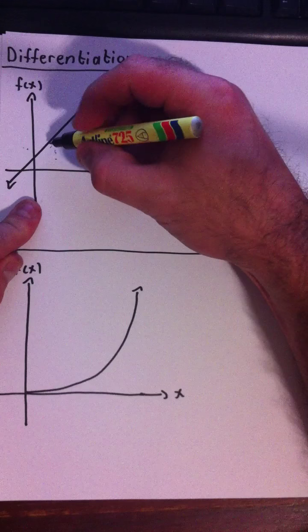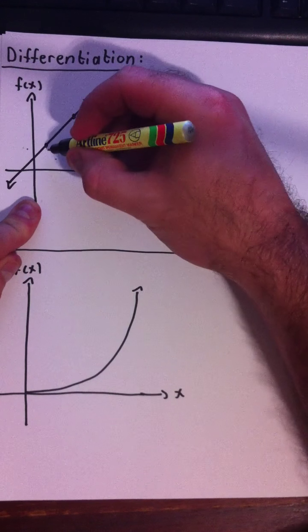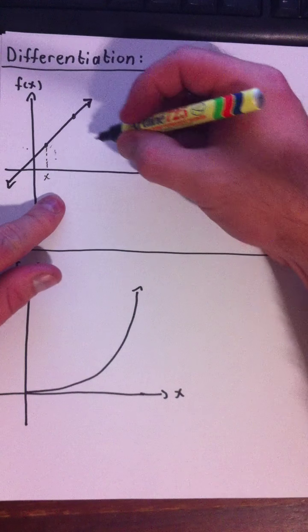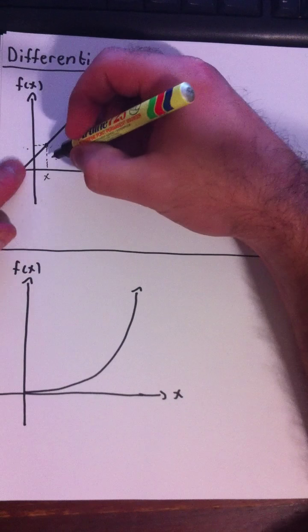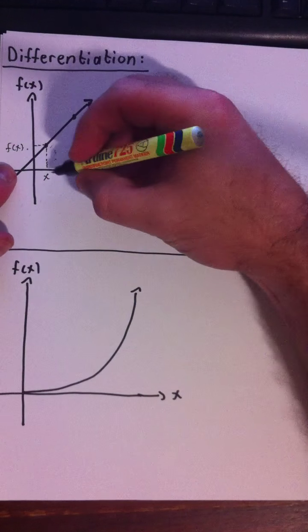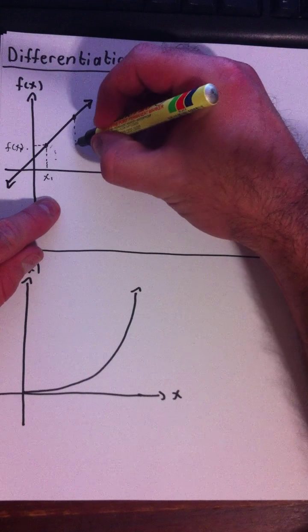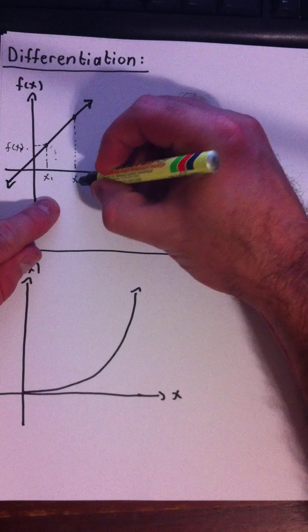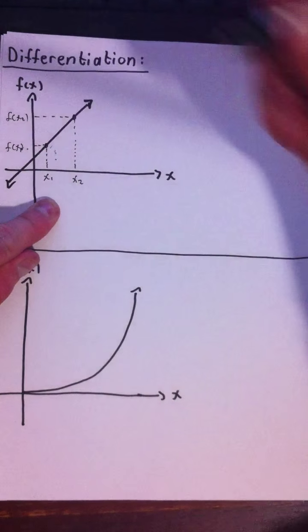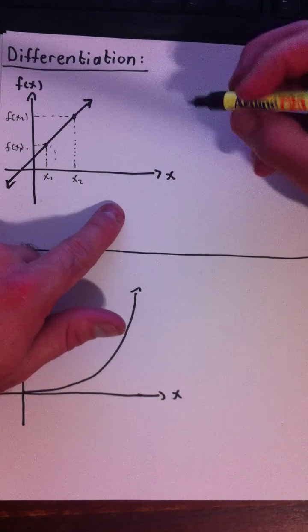Let's say we want to find the gradient of this line. We can take any two points on the line, let's say those two points, find out what the x values are, and then the y values corresponding to it. So if this is x, the output value here would be f of x. Let's call it x1, so f of x1, and let's call this x2, and the output value there would be f of x2.